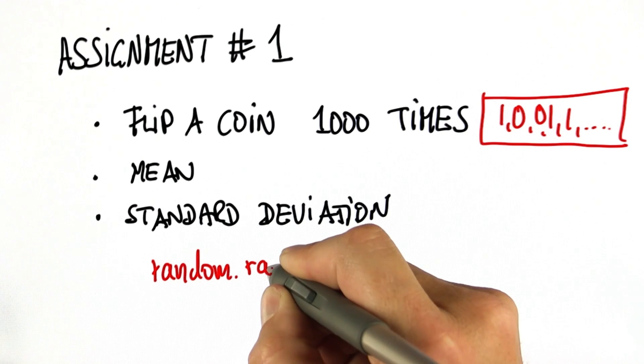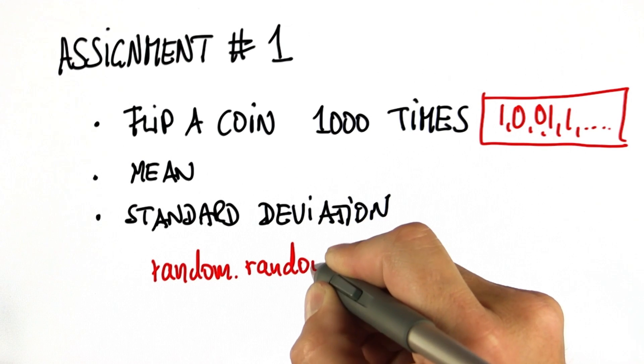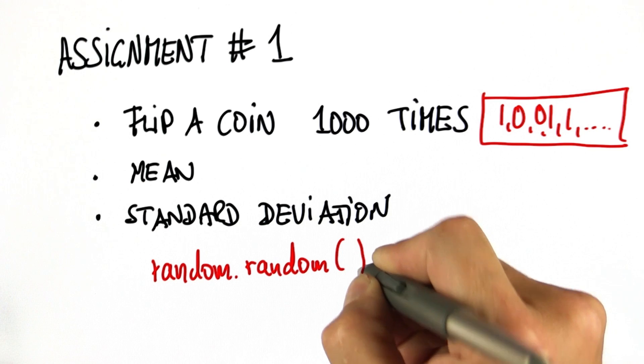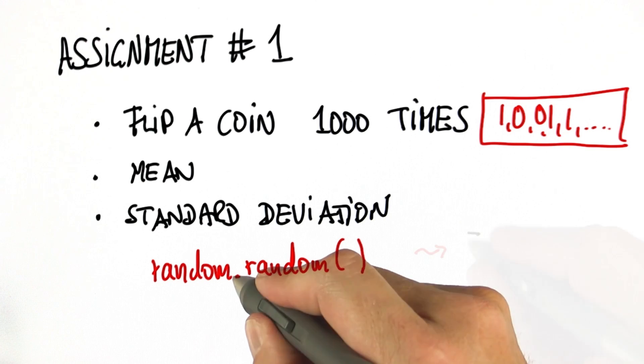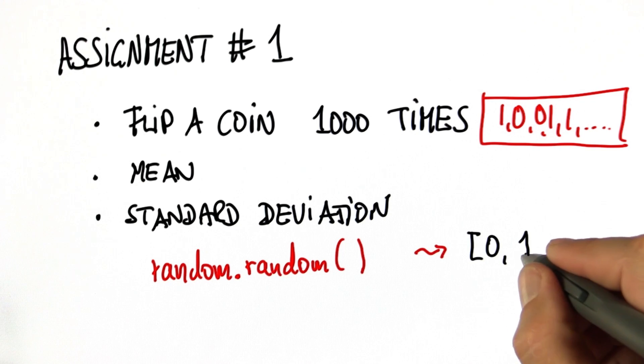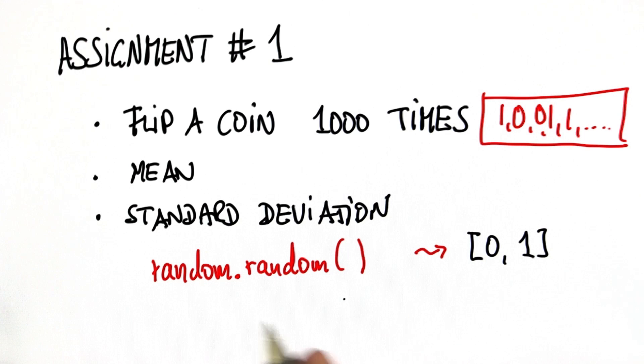The thing to know is that with the function random dot random, there's two of them, the dot in the middle, gives you a random value that sits between 0 and 1. Every time you call this function, you get a different random value, which is nice because you just have to call this 1,000 times to get the 1,000 samples.